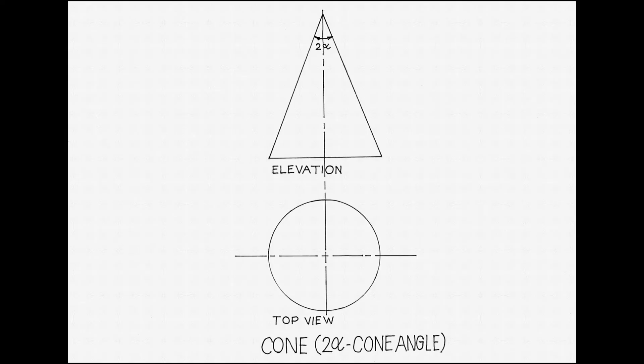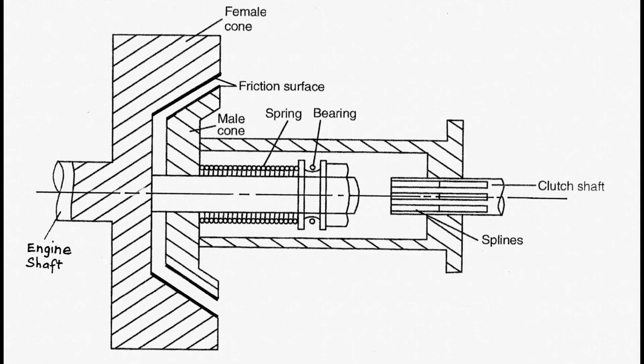The cone has a circular base and a slanting surface. If we look at the elevation or front view of the cone, the angle made by the slanting surface at the apex is known as the cone angle. This is the diagram of the cone clutch, which has conical frictional surfaces that come in contact with each other.